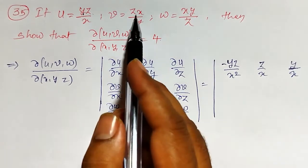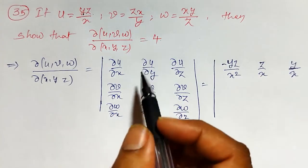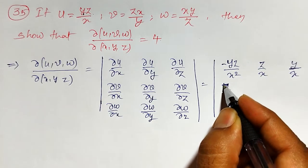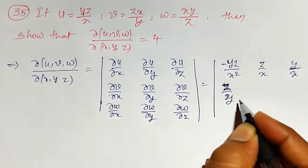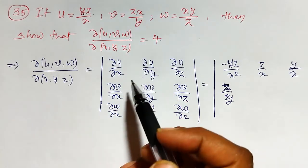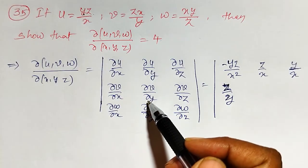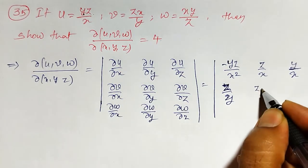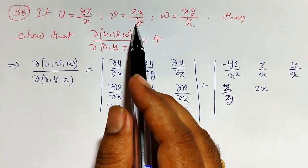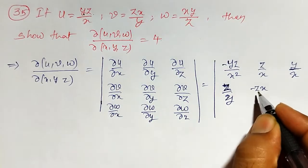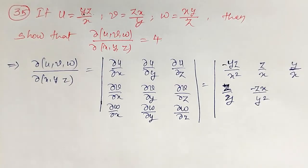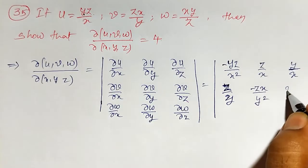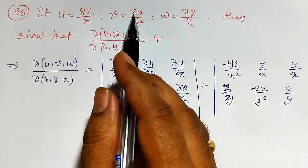For the second row, v = xz/y. The partial derivative ∂v/∂x: z/y is constant and the partial derivative of x is 1, so ∂v/∂x = z/y. For ∂v/∂y: xz is constant and the partial derivative of 1/y is −1/y², so ∂v/∂y = −xz/y². For ∂v/∂z: x/y is constant and the partial derivative of z is 1, so ∂v/∂z = x/y.